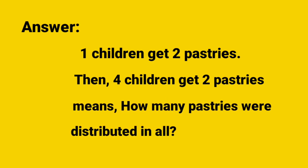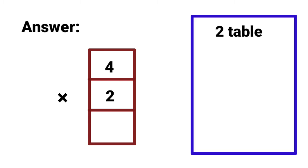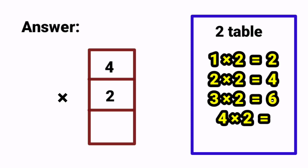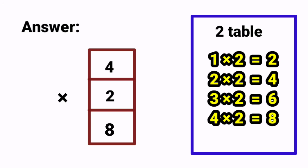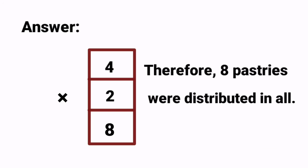So, to get the answer, we should use multiplication: 4 into 2. Which table can we use for this sum? We can use the 2nd table. Join with me: 1 two is 2, 2 twos are 4, 3 twos are 6, 4 twos are 8. Therefore, 8 pastries were distributed in all.